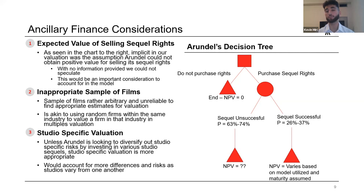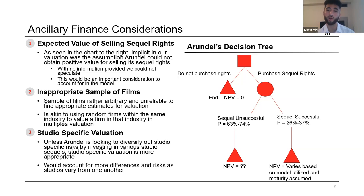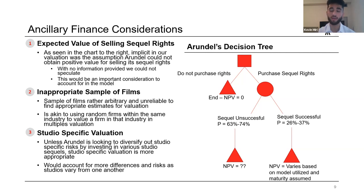To close, we wanted to point out ancillary finance considerations to add accuracy to our valuation models. First, finding the expected value of selling the sequel rights — we assumed zero in our model due to lack of information, but Arundel does have the opportunity to sell, so it might be a positive NPV scenario. Second, the sample of films provided was somewhat arbitrary — akin to valuing a firm by picking a random number of comparable firms instead of examining their actual characteristics. Finally, a studio-specific valuation might be in Arundel's favor unless they are investing in enough studios to diversify out unsystematic risk, which didn't seem to be the case. More information about the types of studios would make the valuation more accurate. Thank you for your time.